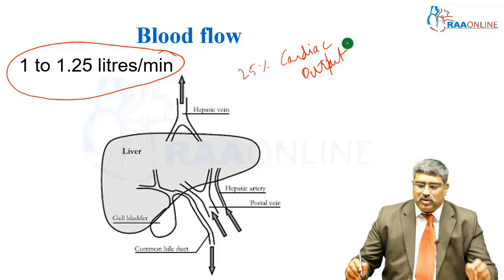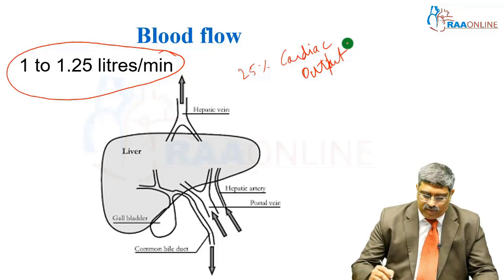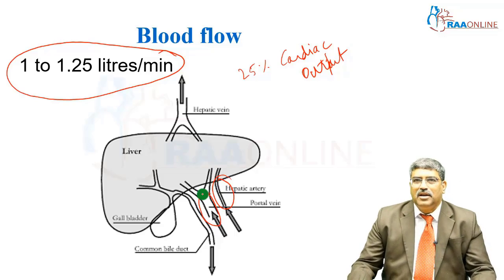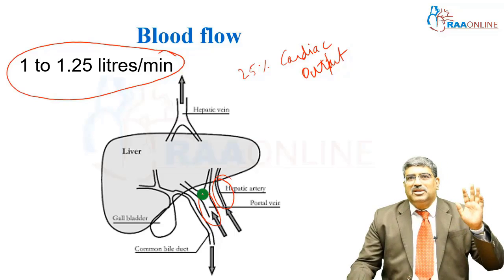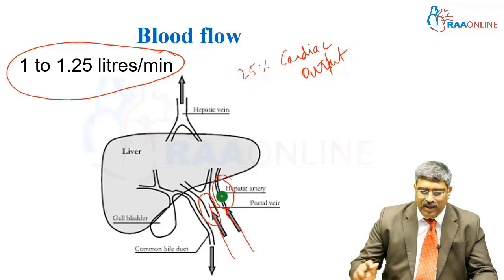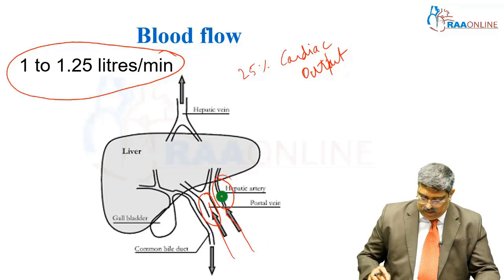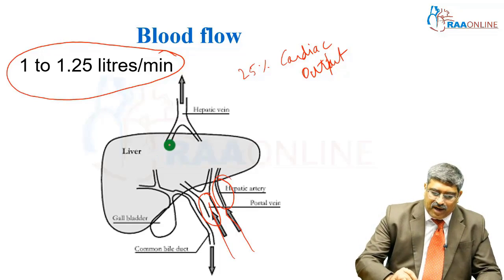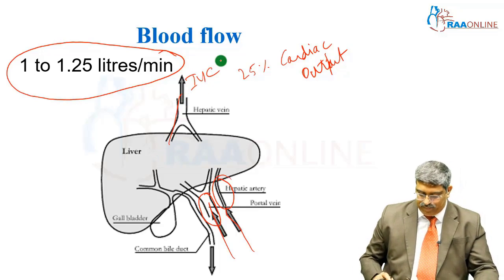The main source of hepatic blood flow is the hepatic artery and the portal vein. The liver has a dual supply — one from the portal vein and another from the hepatic artery. Through the hepatic vein, it finally drains into the inferior vena cava.